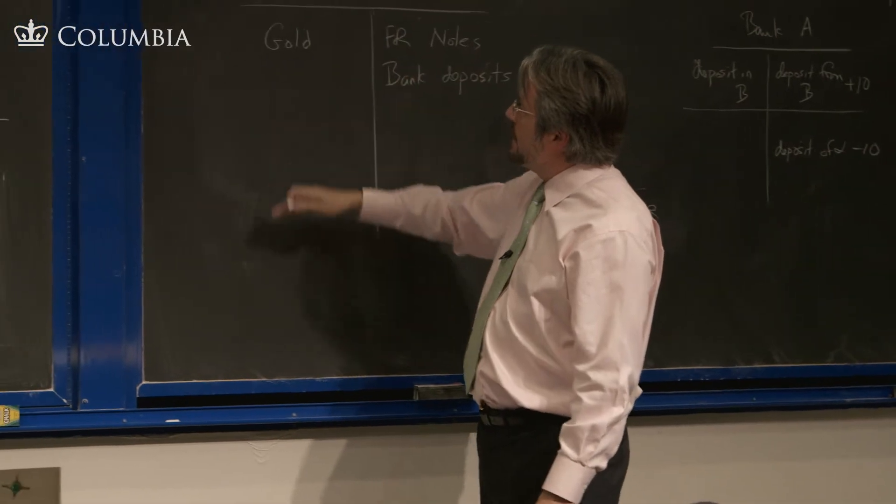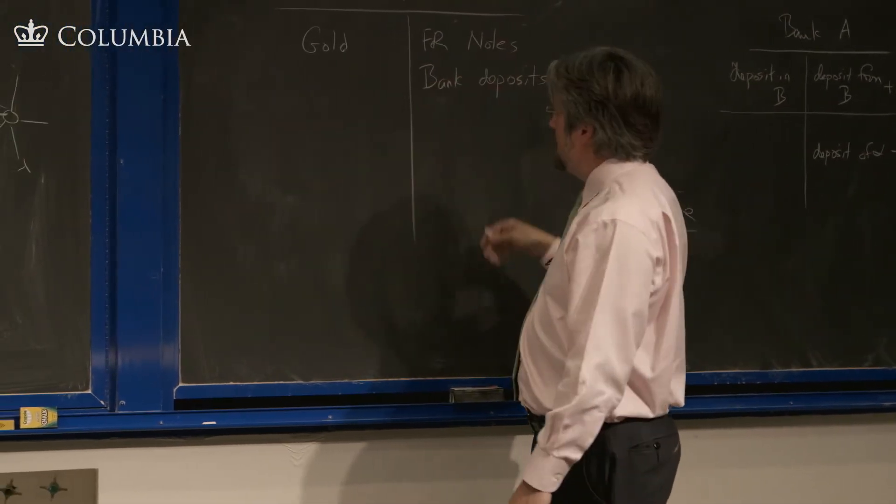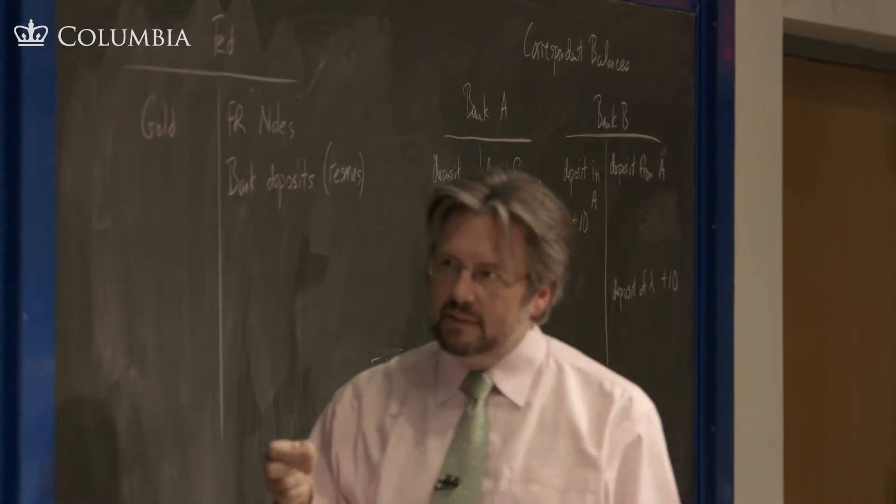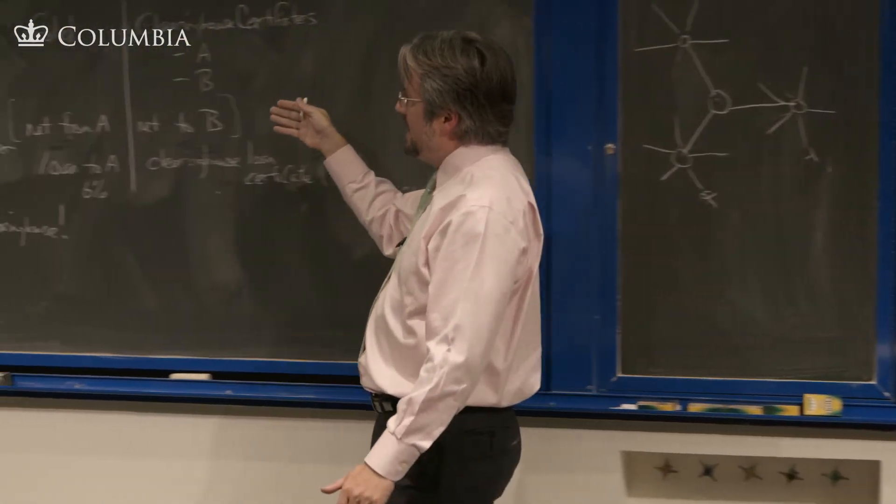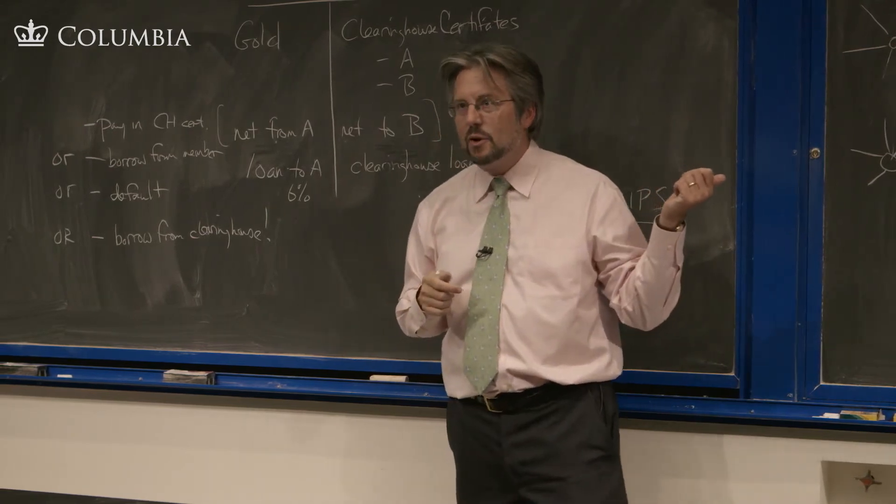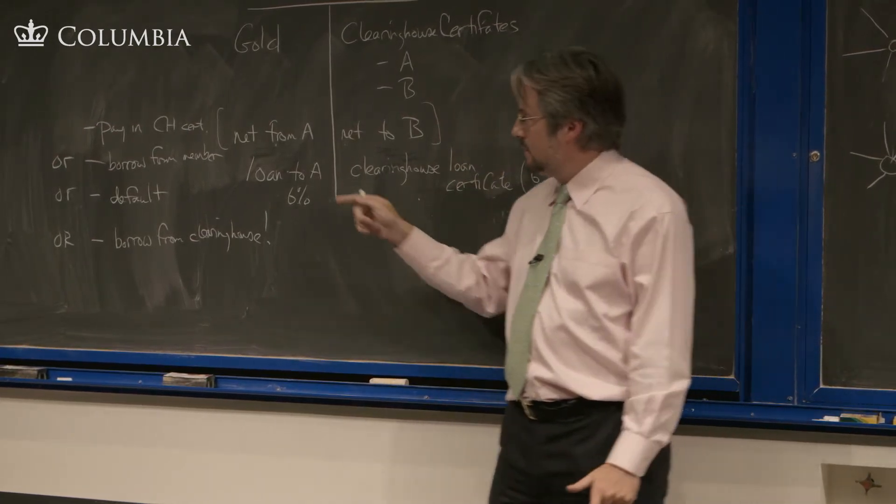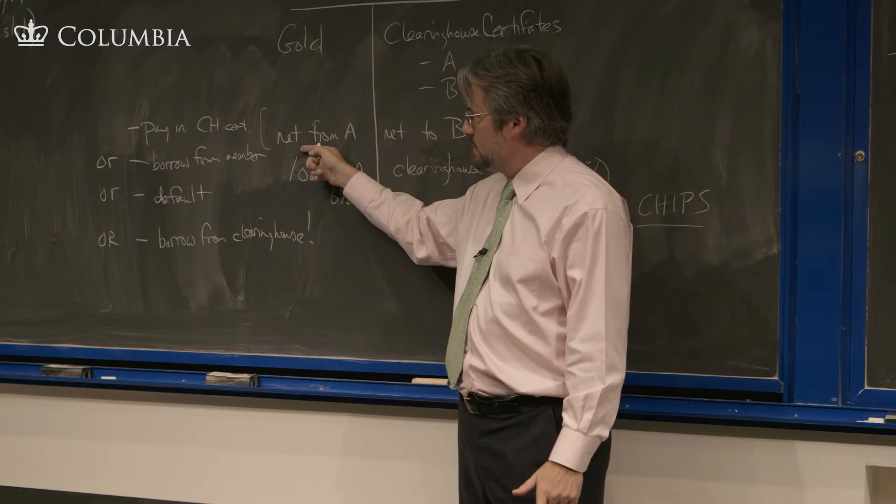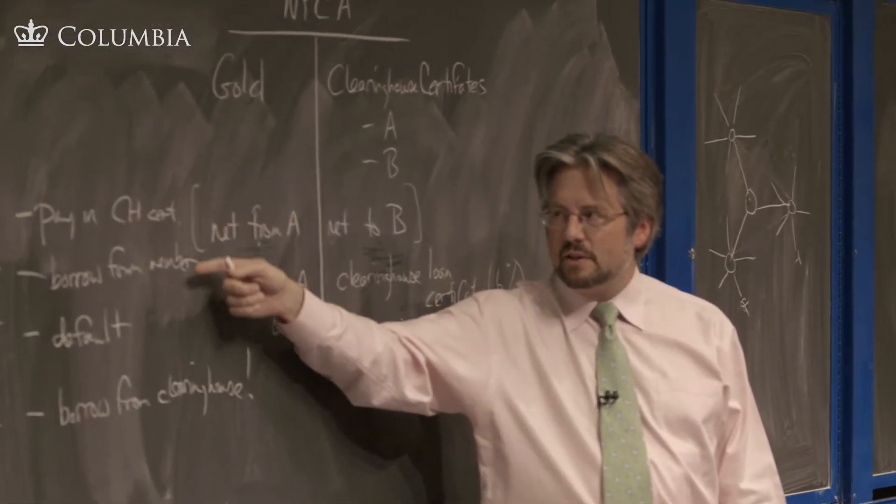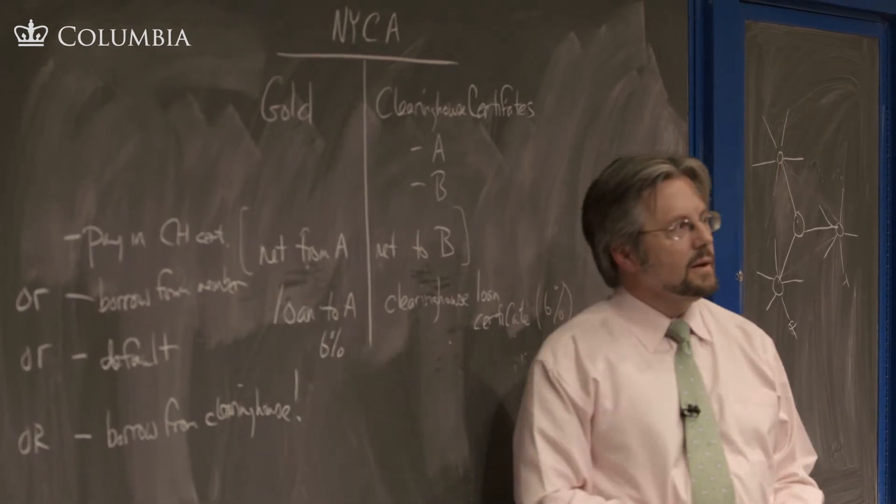So you can have building up of overdrafts and balances, due tos, due froms during the day, just like this. At the end of the day, if you don't have a balance, if you don't have a positive balance at the Fed, so you're like this net from A person, you need to borrow from a member, you need to borrow from somebody else.